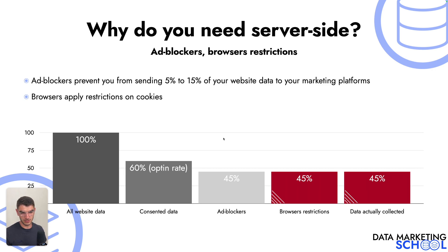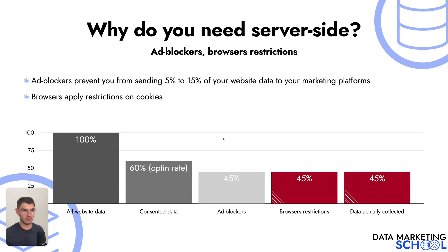You can optimize this opt-in rate, but in this example it's 60%, so you lose 40% of your data by collecting data only from visitors who consented. After this, you have technical limitations: ad blockers and browser restrictions. Ad blockers basically block tracking requests from being sent from the browser, decreasing the percentage of data you can collect — most of the time between 5% to 15%, depending on which of your current website traffic is actually using ad blockers.